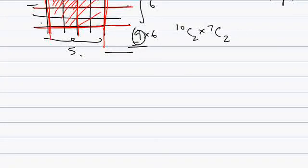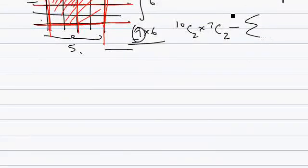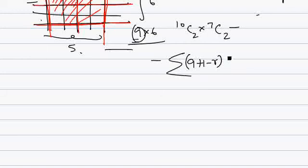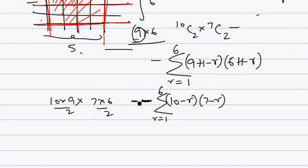The number of rectangles excluding squares is: 10C2 × 7C2 minus the summation of (10−r)×(7−r), where r varies from 1 to 6 (the lesser of the two values). That is: (10×9/2) × (7×6/2) minus this summation. Calculating this will give you the number of rectangles excluding squares.